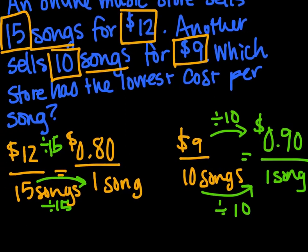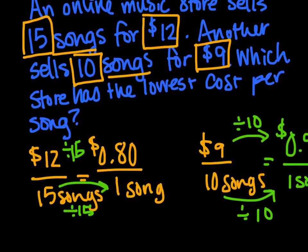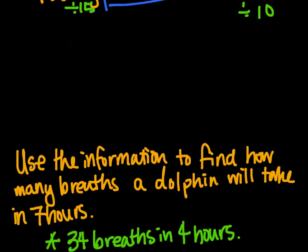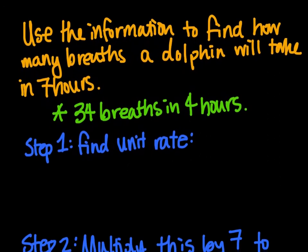So which one has the better situation? Well, the first online music store has a cheaper cost per song. The first online music store. All right, so let's continue on and try another type of problem.